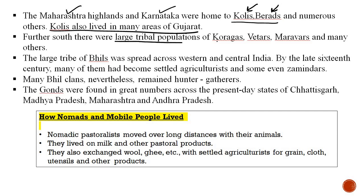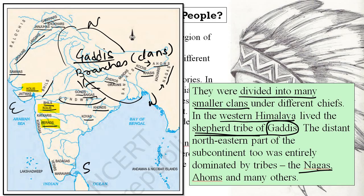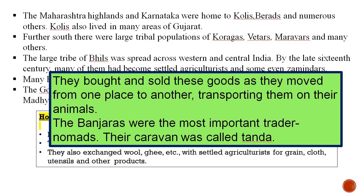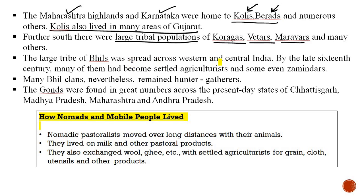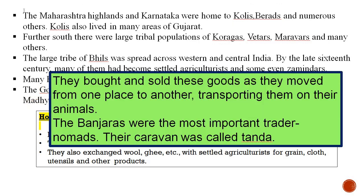Further south, there were larger tribal populations of Koragas, Vetars, and Maravars. The large tribe of Bheels were spread across western and central India; many Bheel clans remained hunter-gatherers. The Gonds were found in present-day Chhattisgarh, Madhya Pradesh, Maharashtra, and Andhra Pradesh.